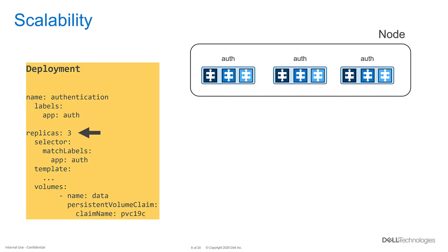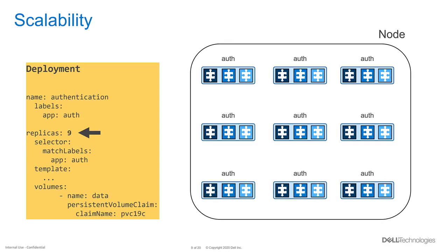Let's take an example of this declarative state-based management. Say there is an authentication service — typically used heavily by every other service in the application and therefore needing to be served much more than others. No problem: by just changing one field in the deployment manifest file, any number of replicas can be served. Kubernetes takes the manifest file as input and spins up the required number of replicas with the right storage type and service level as defined in the manifest.